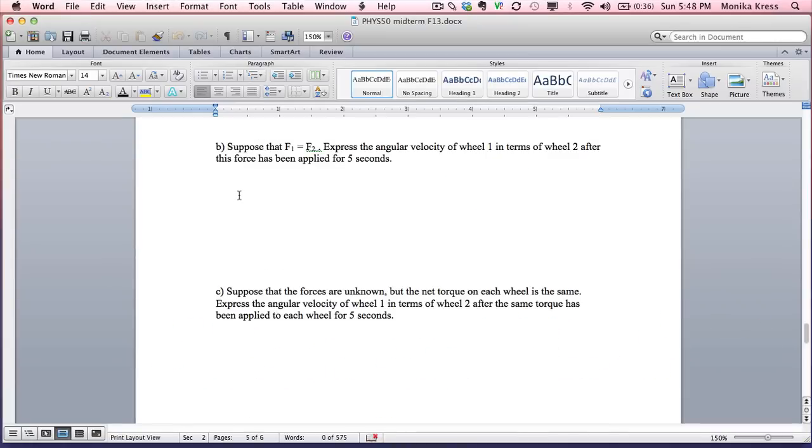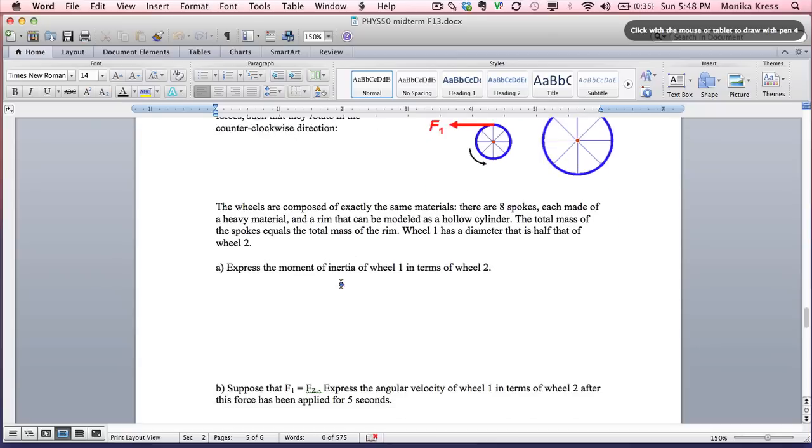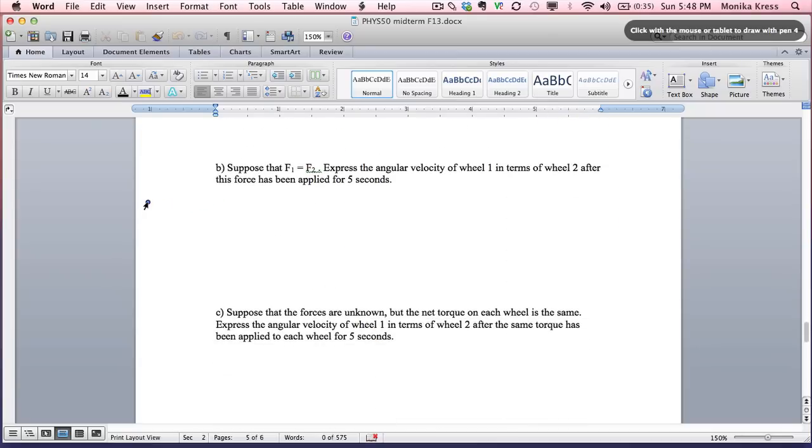That's just part one. In part b, we're going to suppose that F1 is equal to F2. We want to express the angular velocity of wheel 1 in terms of wheel 2 after this force has been applied for 5 seconds. Here's where you have to remember that the torque is equal to r cross F. When you have a situation where the angle between r and F is 90 degrees, the sine equals 1, so it simplifies down to torque equals rf.